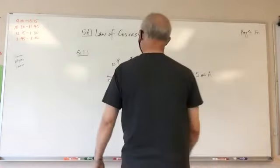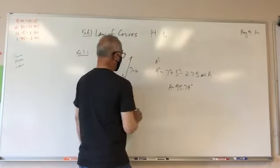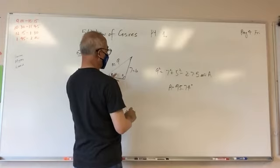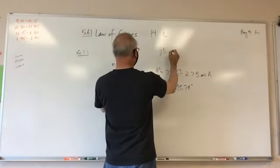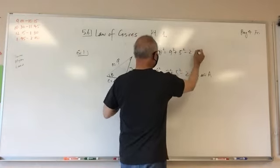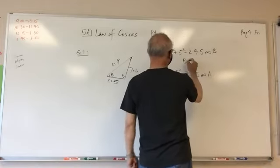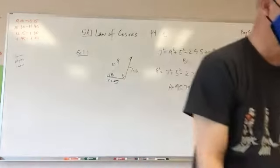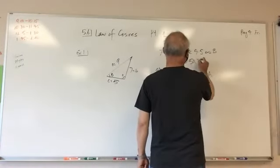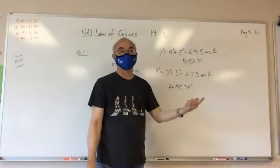And then they solve for angle b. Angle b would be here, so b squared equals a squared plus c squared minus 2 times 9 times 5 cosine b. From this they found b to be 50.7 degrees. And obviously angle c would be this plus this subtracted from 180.